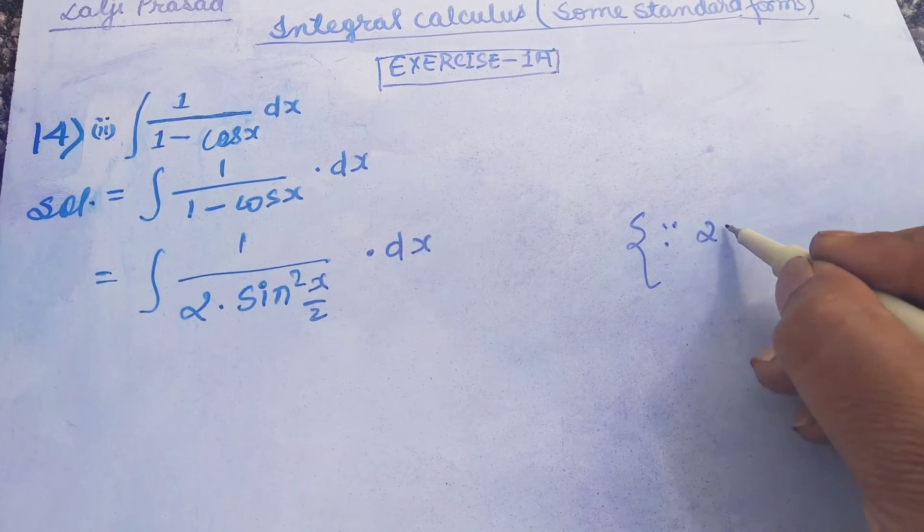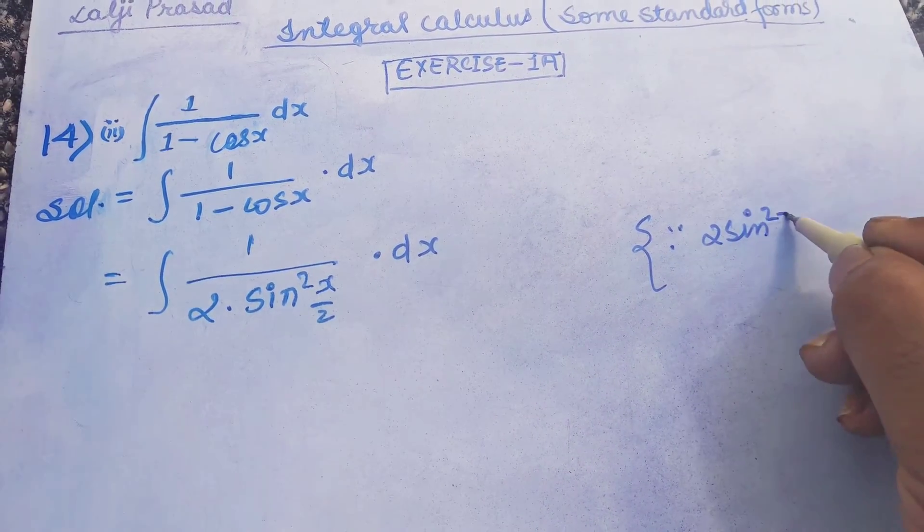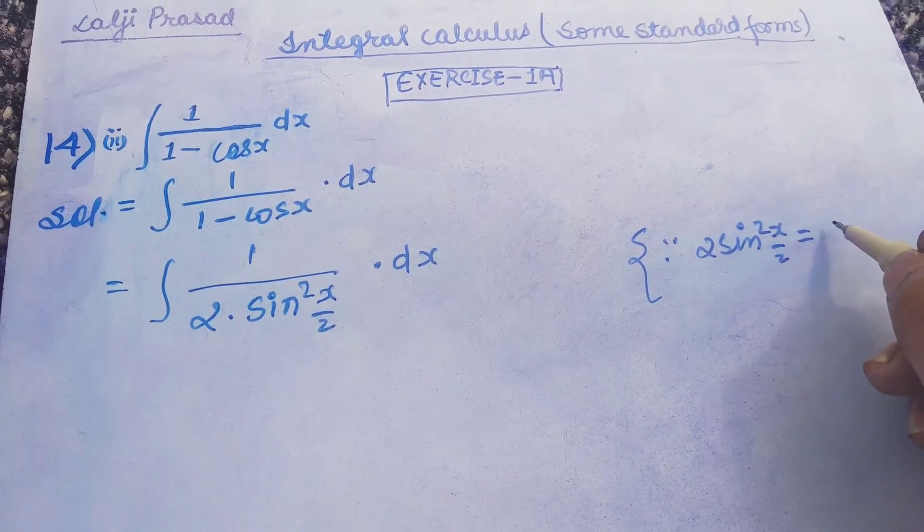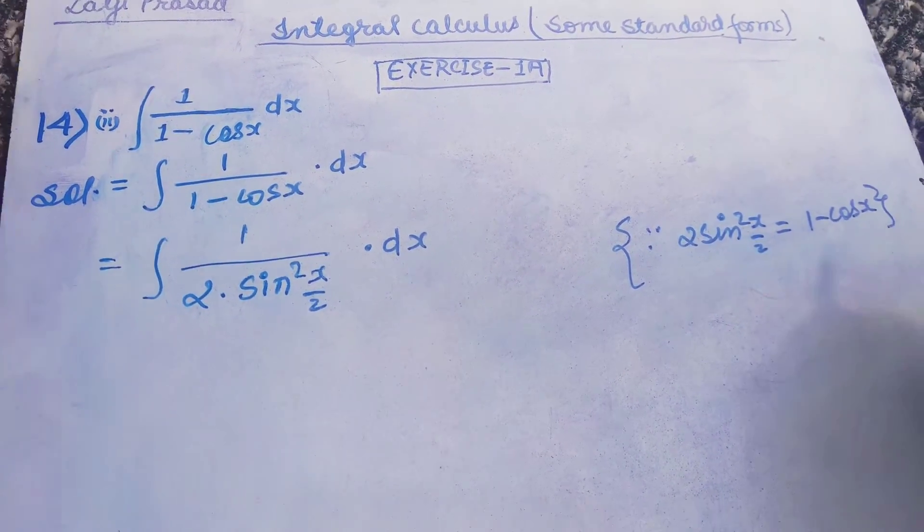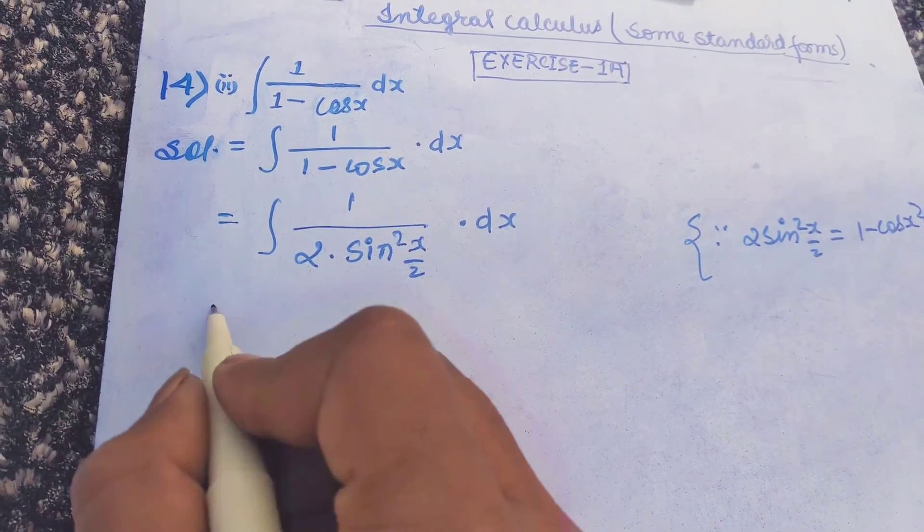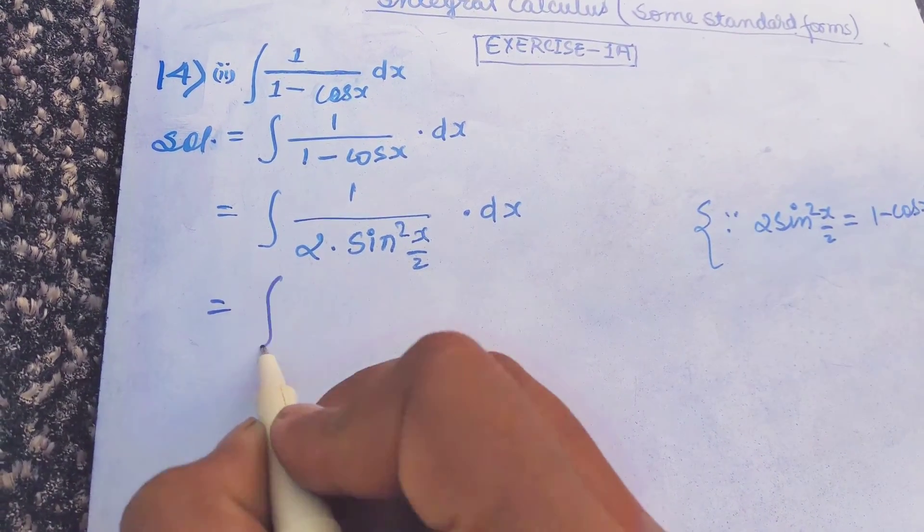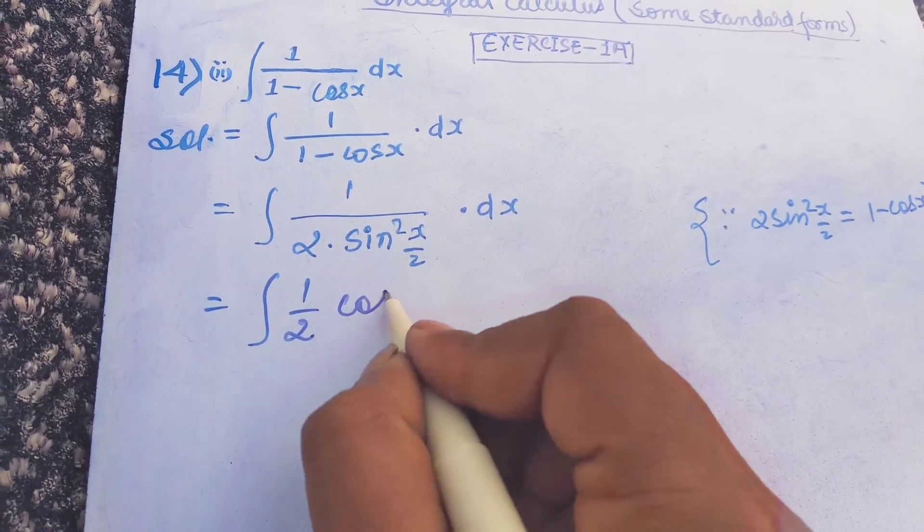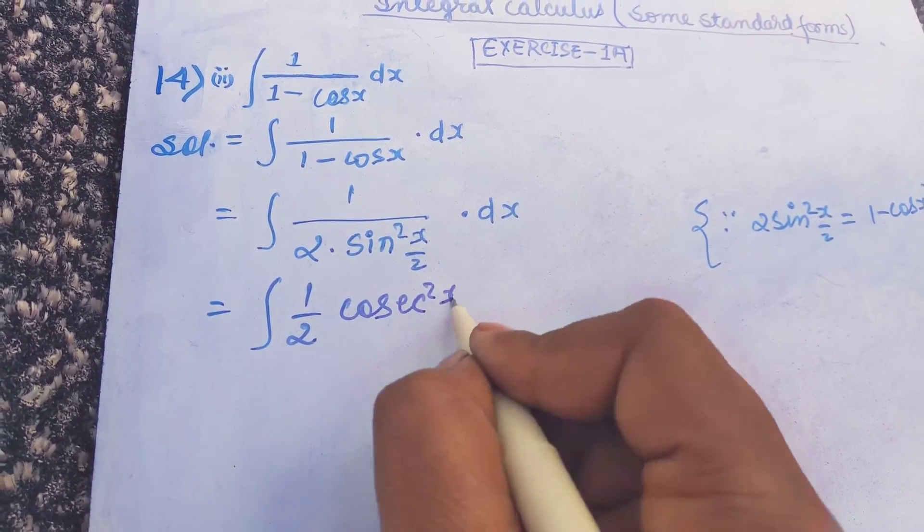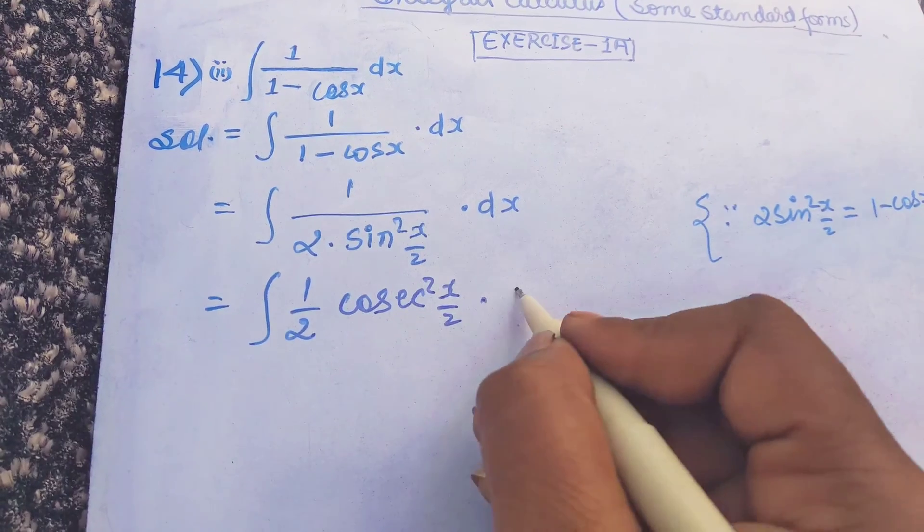Since 2 sin squared x upon 2 which is equal to 1 minus cos x. In the next step it can be written as integration of 1 upon 2 cosec squared x by 2 dx.